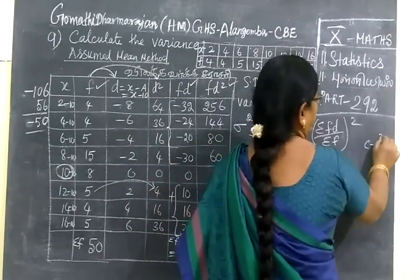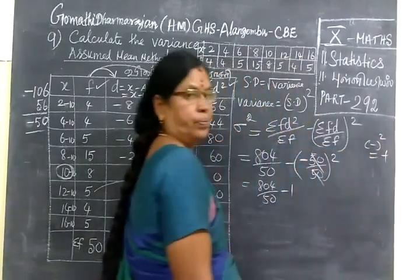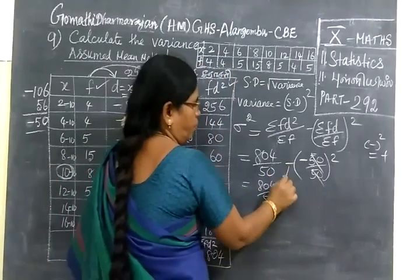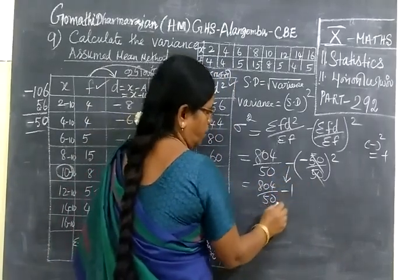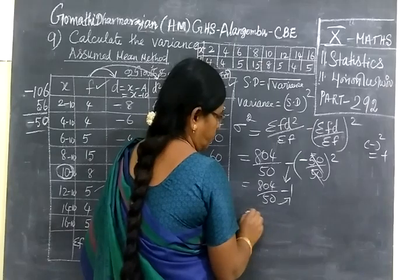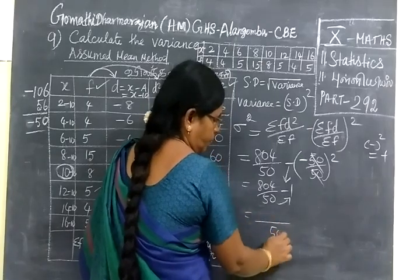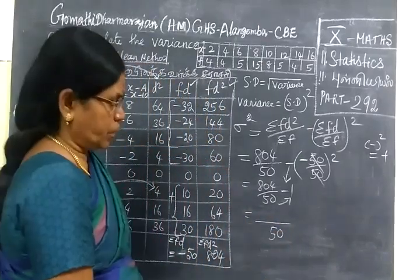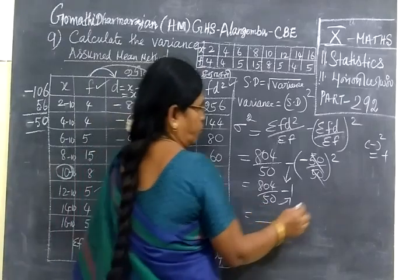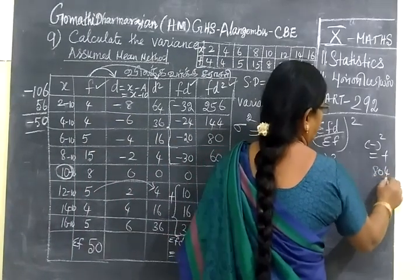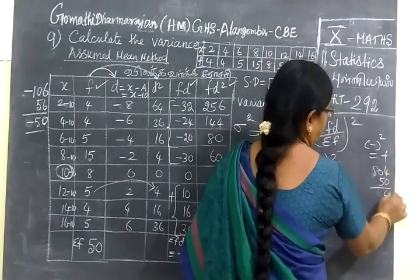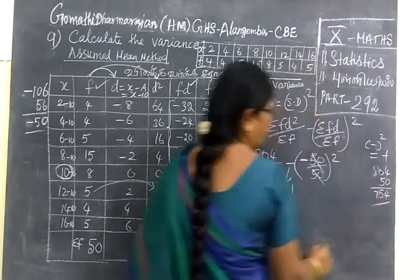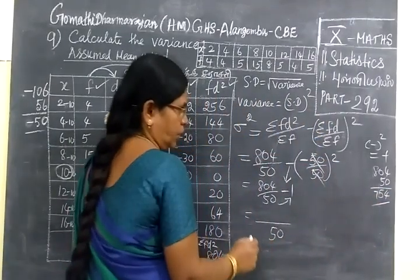Now, this minus 1 is squared, so minus whole square is plus 1. Now cross multiply. So cross multiply, you get 50. You write the LCM of 50. Then 804 minus 50 is 754.